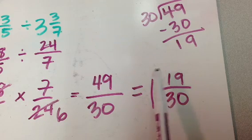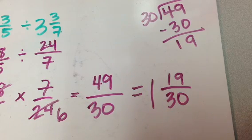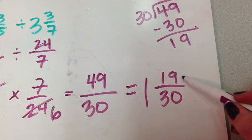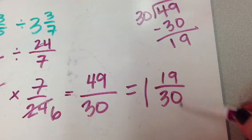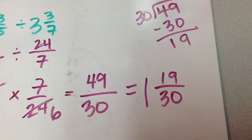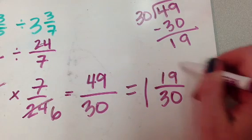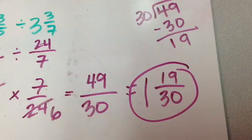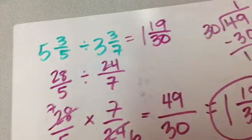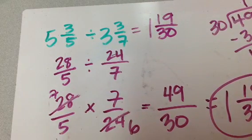Now I have to ask myself, the second question is, is it reduced down as far as it can go? And in this case, look at that, 19 is prime. So the only way that I could divide something out of both of these is if 19 divided evenly into 30, which it doesn't, right? 19 times 2 is not 30, so it doesn't work. So I know that this is my answer. It's reduced down as far as it can go. And I can come back up here and say that 5 and 3 fifths divided by 3 and 3 sevenths equals 1 and 19 thirtieths, after all of that work.